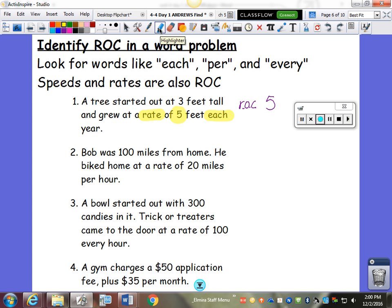We're going to do something with the 5 and the 3 later. But right now, I want to focus on can you identify the rate of change. Identify it or calculate it. Bob was 100 miles from home. He biked home at a rate of 20 miles per hour. Look at all those key words pointing at the 20. His rate was 20 miles per hour. A bowl started out with 300 candies. Trick-or-treaters came to the door at a rate of 100 every hour. So my rate of change is 100. A gym charges a $50 application fee plus $35 per month. So our rate of change is 35.